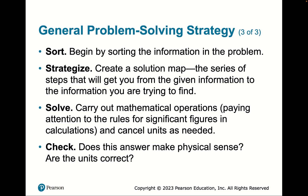Check whether the answer makes physical sense. If you put ice cream in an oven for four hours and calculate that it got colder, something is wrong. In mathematics, squaring a number creates two answers and one is nonsensical; cubing creates three answers and only one is real. After solving mathematically, ask which answer makes physical sense — some answers must be discarded. For example, if you calculate the mass of a sodium atom and get 10²³ kg — something the size of the moon — you probably divided instead of multiplied somewhere.